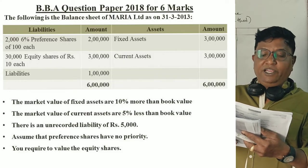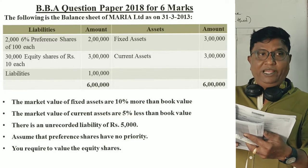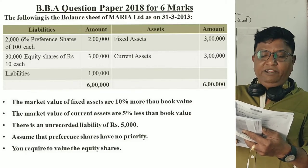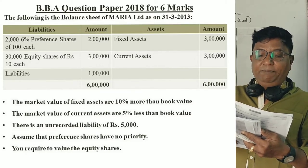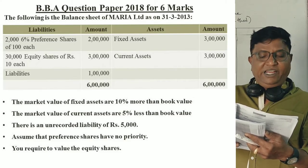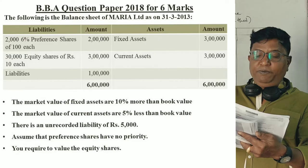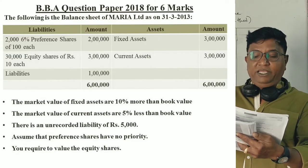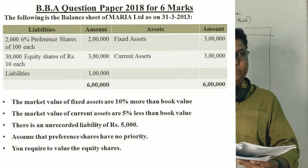Market value of fixed assets is 10% more than the book value. Market value of current assets is 5% less than the book value. There is an unrecorded liability of ₹5,000. Assume preference shares have no priority. You are required to value equity shares.